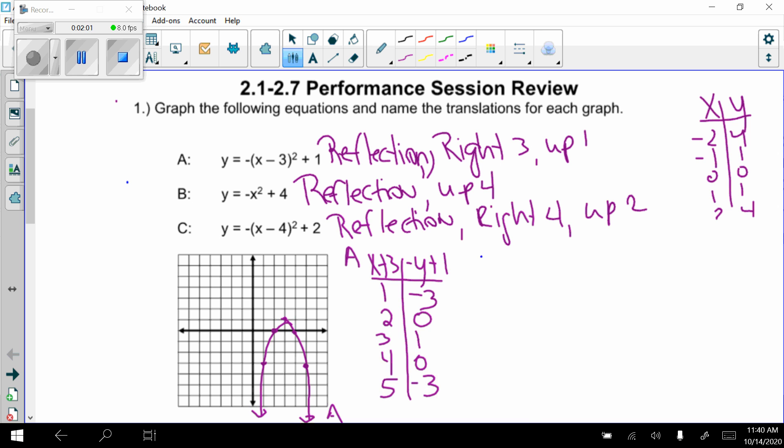So now I'm going to do parabola B, my xy table. My x's don't change. My y's become negative y plus 4. So negative 2, negative 1, 0, 1, and 2. Change the value of all my original y's and then add 4. So that gets me 0, 3, 4, 3, and 0.